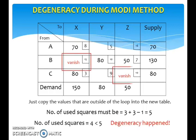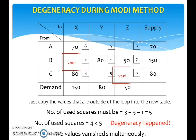Degeneracy happened at the 2 squares just now where 2 values vanish simultaneously. So we must add an artificial zero at either one of these 2 squares. Intuitively, just choose the square with the lowest cost.